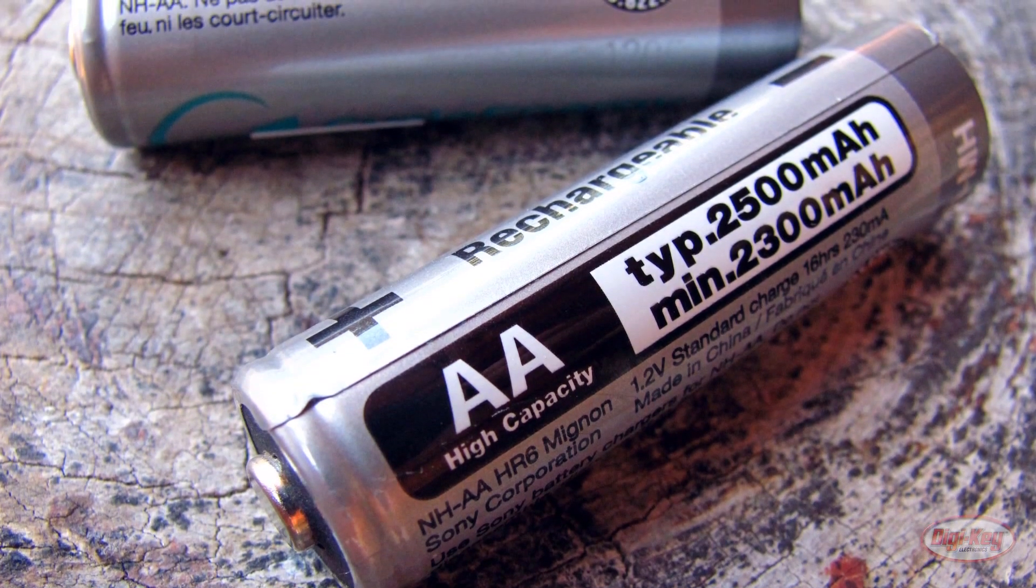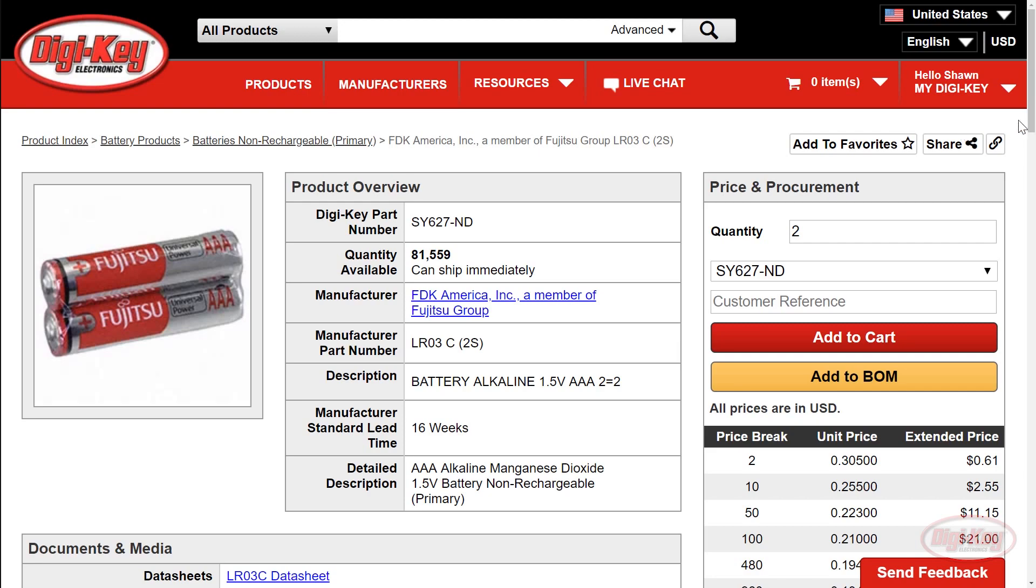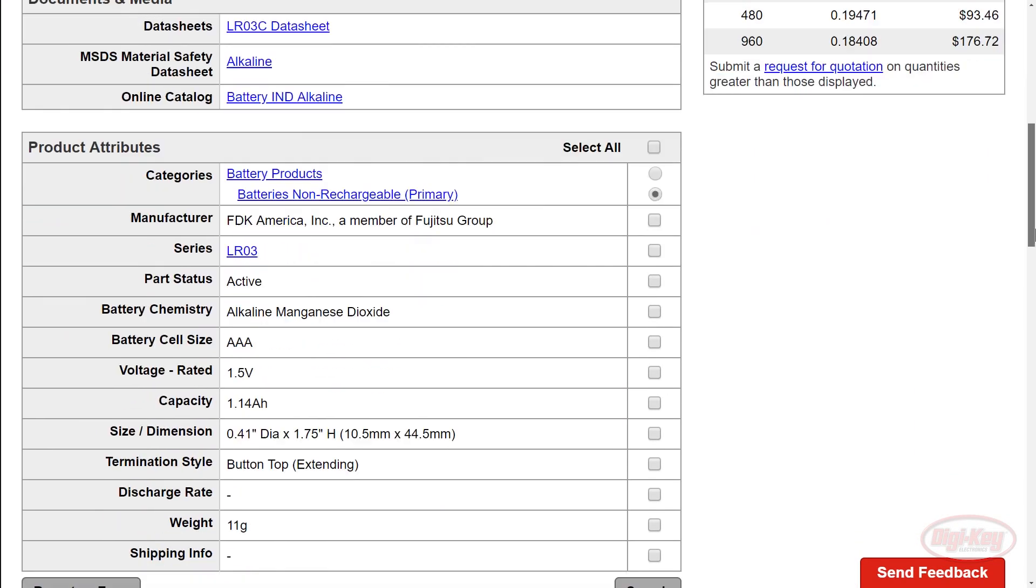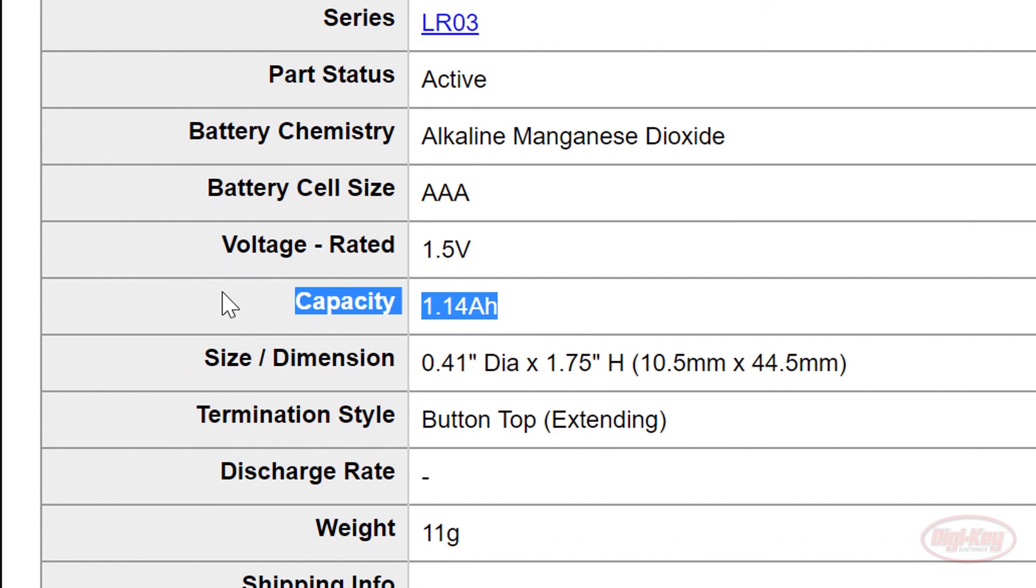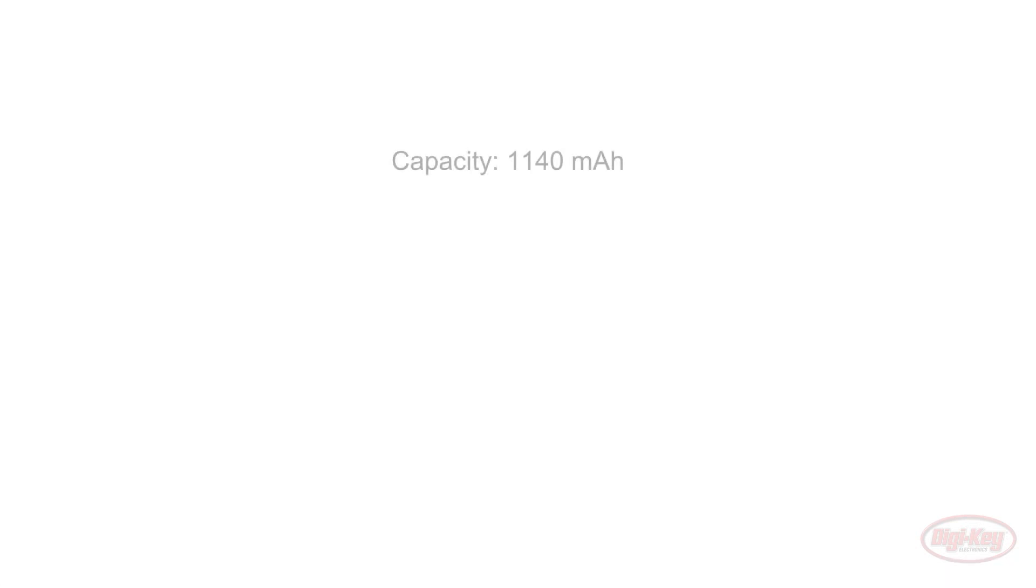Sometimes, batteries will list a nominal capacity in milliamp hours on the battery itself, or sometimes you'll find it on the vendor's product page. This can be used for a very quick and dirty back of the envelope calculation if you need a starting place. Let's use that vendor-provided capacity rating of 1.14 amp hours for a AAA battery, which is equal to 1,140 milliamp hours.